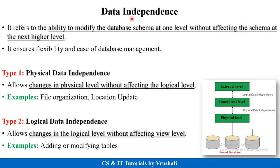The next topic is data independence. Data independence means the ability that if you do any changes or modifications in one level, it does not affect another or higher level. There are two types: physical and logical data independence. Physical data independence means if you make changes in the physical level, it does not affect the conceptual level — for example, changing the location or file organization of a database does not affect the conceptual level. Logical data independence means if you make changes in the conceptual level, it does not affect the external level — for example, adding or modifying a table or column does not affect the external level.